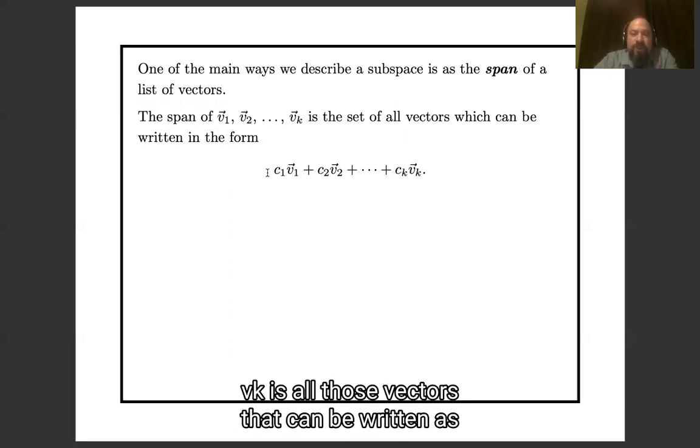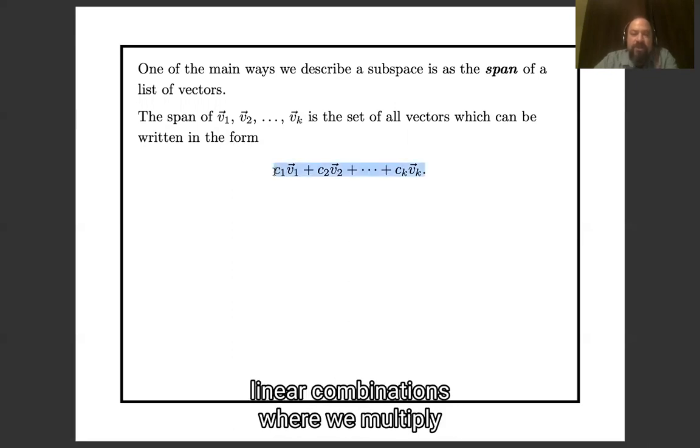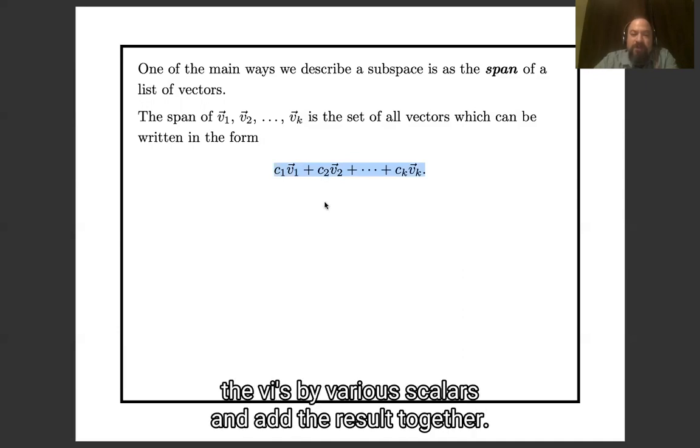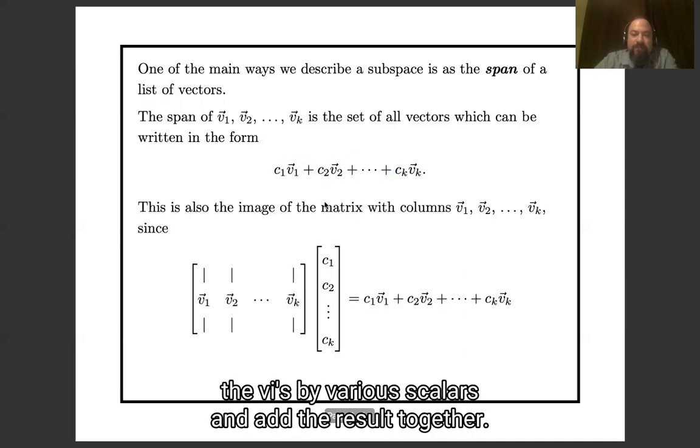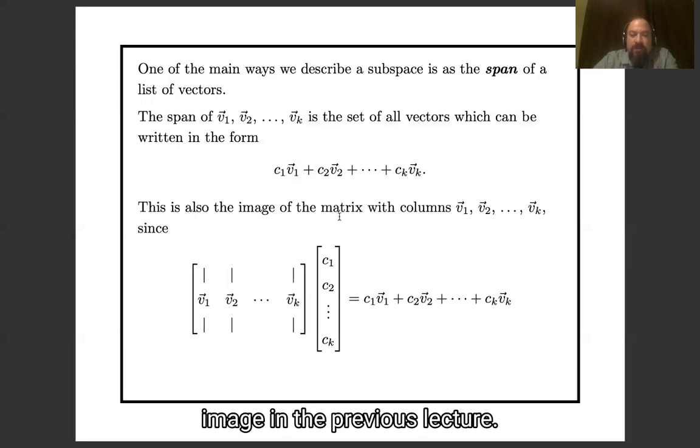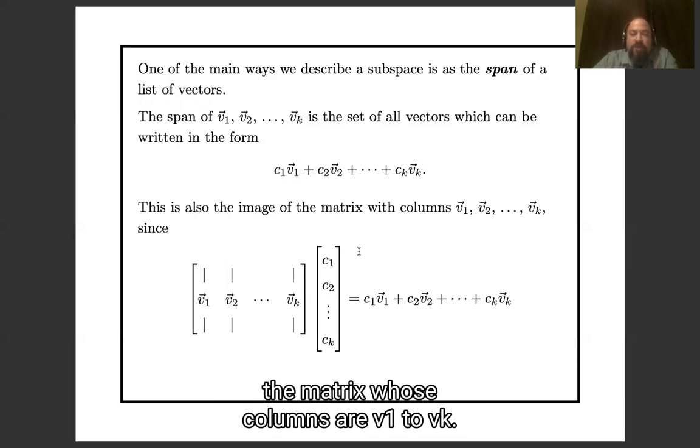is all those vectors that can be written as linear combinations, where we multiply the v_i's by various scalars and add the results together. And to repeat what we said about image in the previous lecture, this is also the image of the matrix whose columns are v1 through vk.